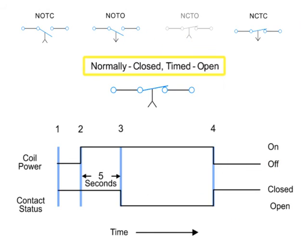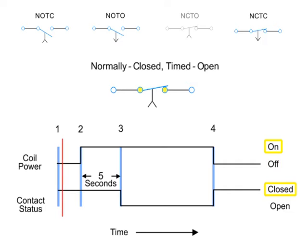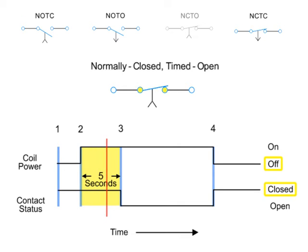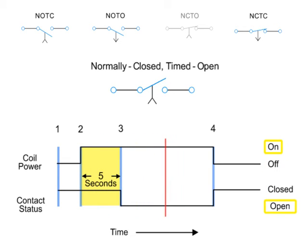Next, we have the normally closed, timed open contact. This type of contact is normally closed when the coil is unpowered or de-energized. The contact is opened with the application of power to the relay coil, but only after the coil has been continuously powered for the specified amount of time — in this case five seconds. Thus, the contacts open five seconds after the coil is energized and close immediately when the coil is de-energized.